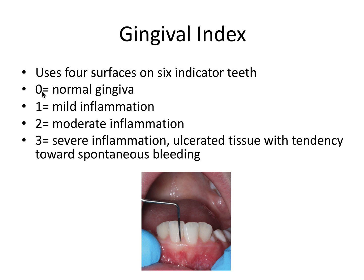Your score would be zero for normal healthy gingiva, one for mild inflammation, two for moderate inflammation, and three for severe inflammation — usually presenting with ulcerated tissue with a tendency towards spontaneous bleeding. So you're going from a low score, normal healthy, to a higher score, not as great. And we'll see this in the next slide as well.